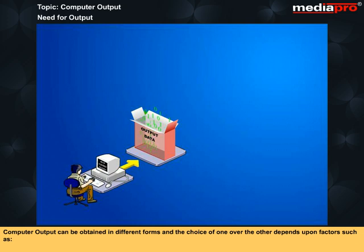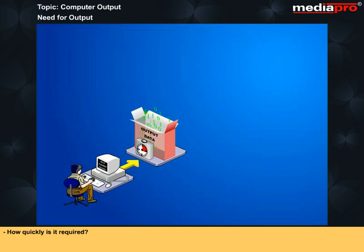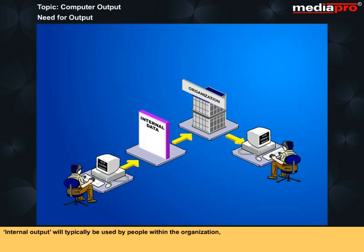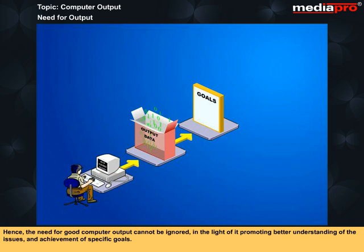Computer output can be obtained in different forms, and the choice of one over the other depends on factors such as who will use the output, how quickly is it required, and how much of it is required. Like input data, output can also be grouped as internal or external to differentiate between people who will use it. Internal output will typically be used by people within the organization, while external output will be used by those outside the organization. Hence, the need for good computer output cannot be ignored in the light of it promoting better understanding of the issues and achievement of specific goals.